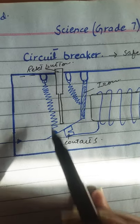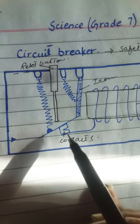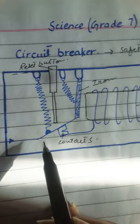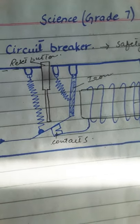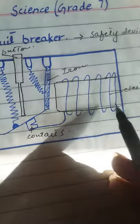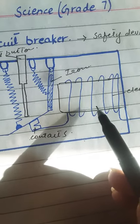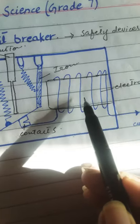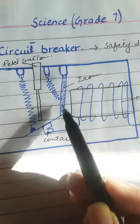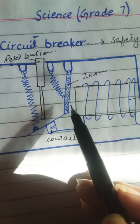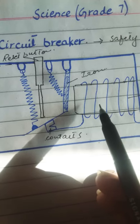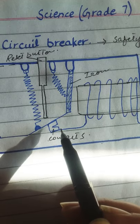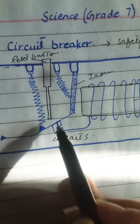The current flows at the same time through the contacts and through the electromagnet. If the current through the wire becomes high — a stronger amount of current — then this electromagnet will get more current and become stronger. When the electromagnet becomes stronger, it will attract the iron bar towards it, and it releases the catch, and the spring pulls the contacts apart.